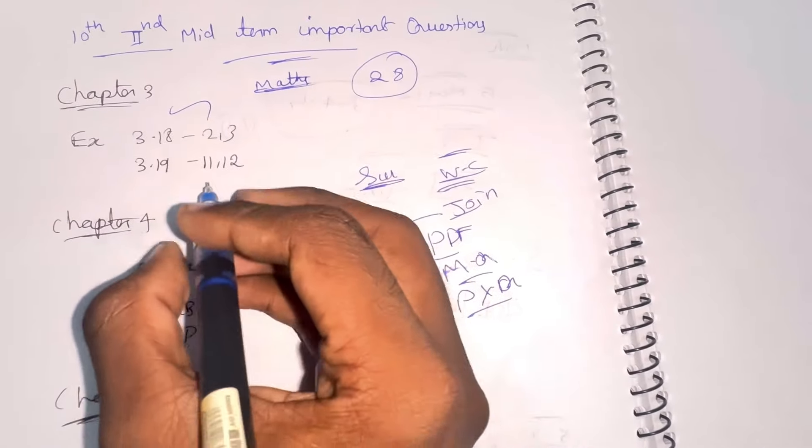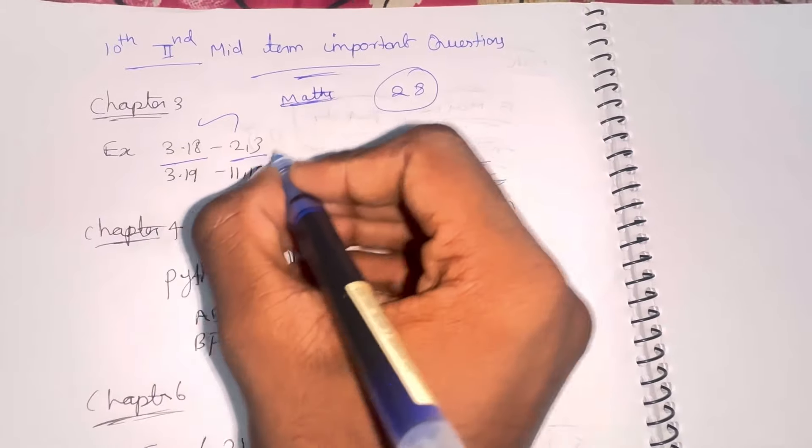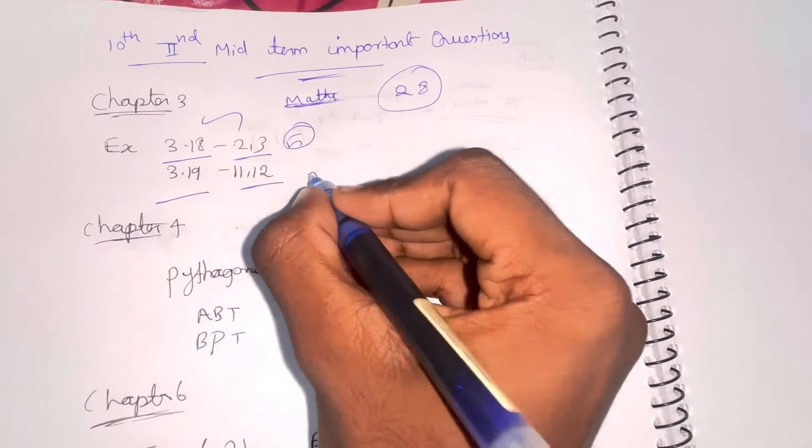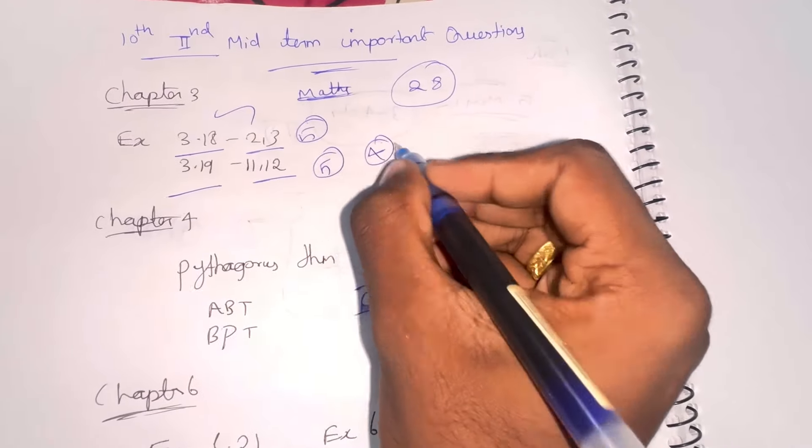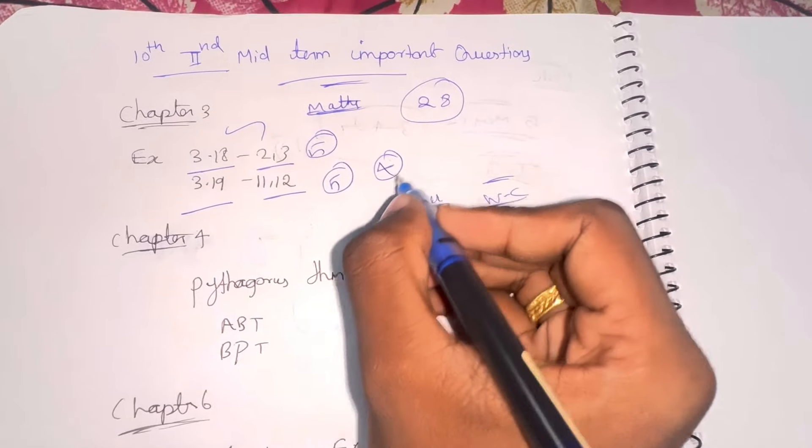In chapter 3, we have 5 mark questions. In chapter 3, we have 4 questions total - 5 marks compulsory.